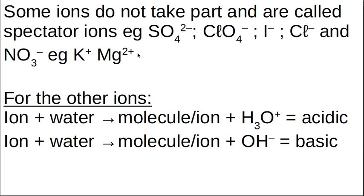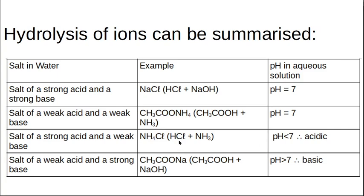Some ions are spectator ions — like sulfate, nitrate, chlorine, iodine, and cations like potassium and magnesium — because they don't participate in equilibrium reactions; they just sit in solution and watch. Other ions can react with water: if an ion and water give you a molecule and a proton, the salt is acidic; if it gives you a hydroxide ion, the salt is basic.